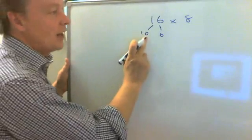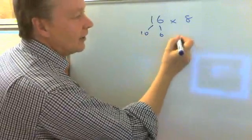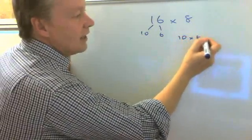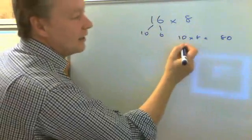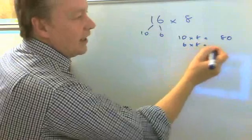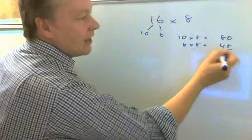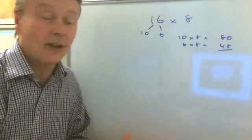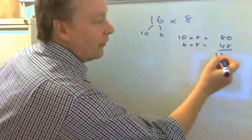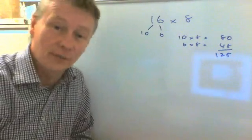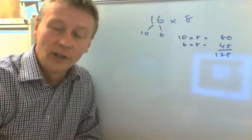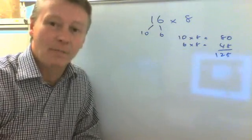So let's do that. 10 times 8 equals 80, and 6 times 8 equals 48. If we now add the two together that will give us an answer of 128, and that's exactly the same answer that we'll come to by using the formal column arithmetic method.